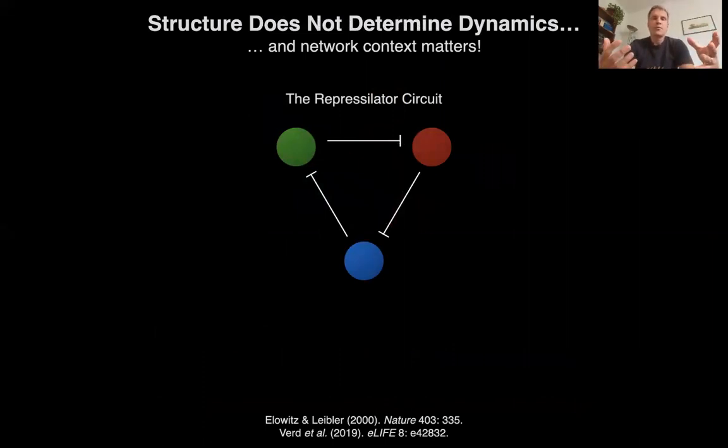So, let me illustrate these two problems. The structure does not determine dynamics problem and also the network context with a simple example. I'll introduce two more motives here. One is called the repressilator. It was built, one of the first synthetic circuits to be built by Elowitz and Leibler in 2000. Beautiful paper.